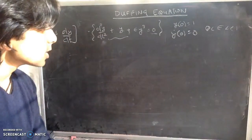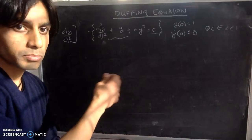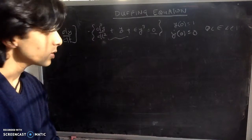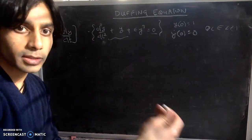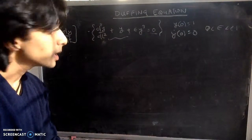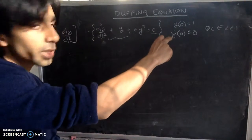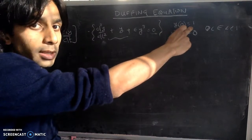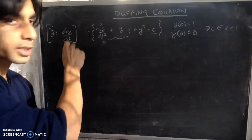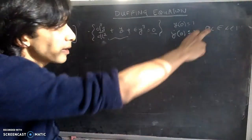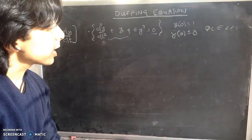The Duffing Equation is essentially a second-order non-linear differential equation. We assume everything has been non-dimensionalized, so y is our dependent variable depending on time t. This is an initial value problem of the form d²y/dt² + y + ε·y³ = 0, subject to y(0) = 1 and y'(0) = 0, where ε is a small positive parameter, 0 < ε << 1.